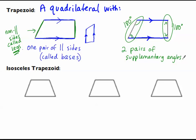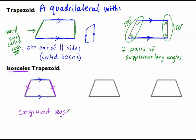Now we can have a specific kind of trapezoid: the isosceles trapezoid. It starts with exactly one pair of parallel sides as bases. Then the legs — the non-parallel sides — are congruent, just like in an isosceles triangle. Know that all properties of a trapezoid are true for an isosceles trapezoid, plus the legs are congruent.